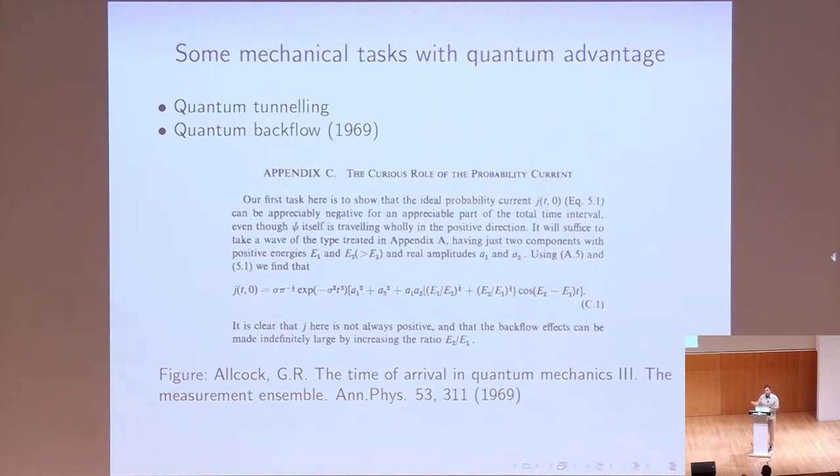start the problem of the time of arrival in quantum mechanics, which is like, when you have a particle moving in one dimension, when can we say that it has arrived somewhere? And he saw that there's a problem, because if you have a quantum particle that only has positive components of the momentum, it can still flow backwards. As he says somewhere, it's like the probability current can be oppressively negative for an appreciable part of the total time interval